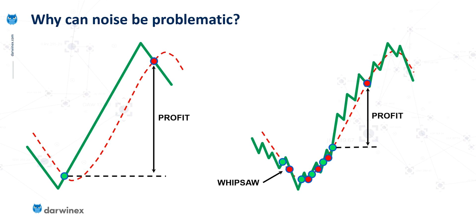The problem is: look at the size of that profit compared to the illustration that had no noise at all — it's significantly less. Furthermore, because we were whipsawed out of the market, we would have made some small losses, and we would have had transaction charges for each of those whipsaws, which will have eaten into that profit even more. So what is a very profitable strategy without noise becomes much less so with noise.